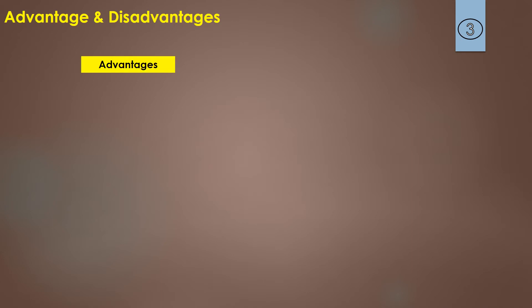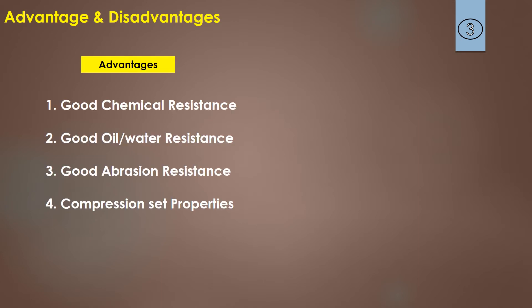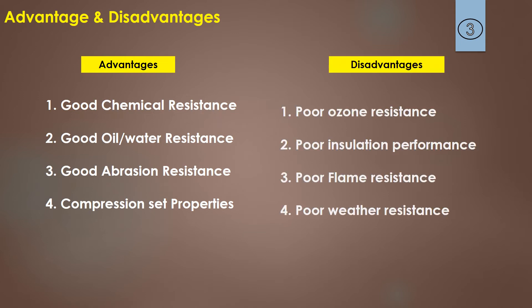The advantages of NBR are: it is a good chemical resistant rubber, has high oil and water resistance, high abrasion resistance, and good compression set properties. The disadvantages are: poor ozone resistance, poor insulation performance, poor flame resistance, and poor weather resistance.